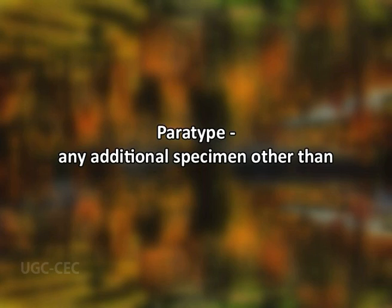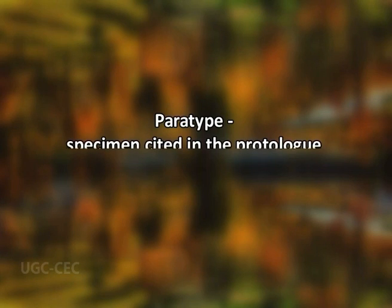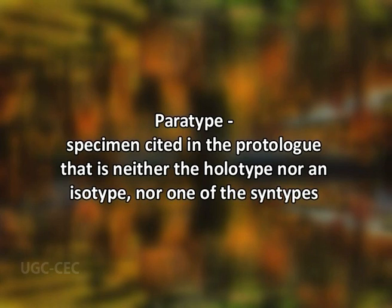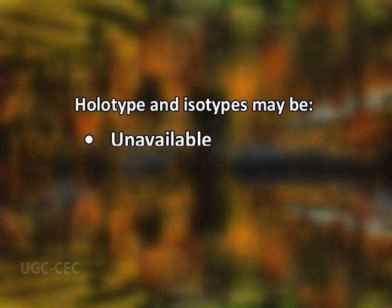Any additional specimen other than the holotype listed in the type series in the original description is called a paratype. Paratypes are not name-bearing types. In systematic botany, a paratype is defined by the International Code of Botanical Nomenclature as a specimen cited in the protolog that is neither the holotype nor an isotype nor one of the syntypes. Under this definition, paratypes are not necessarily explicitly identified as such in the original description. Paratypes are useful in that they allow subsequent botanists to know what collections were examined by the original author and considered part of the same taxon in preparing the description of a new taxon, particularly when the holotype and isotypes may be unavailable, of poor quality, or lacking in certain details.